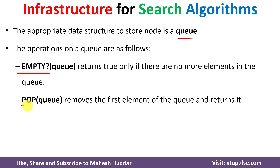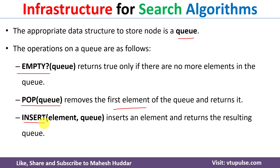The second method is pop: it accepts a queue as a parameter, removes the first element from the queue, and returns it. The last method is insert: it takes an element and a queue as parameters and inserts the element into the queue. These are the methods applied on the queue that is used to store nodes in the search algorithm.